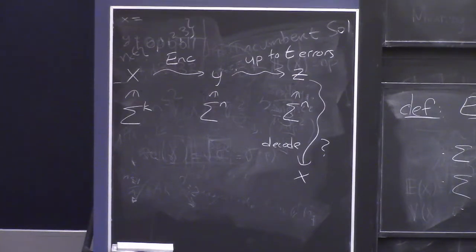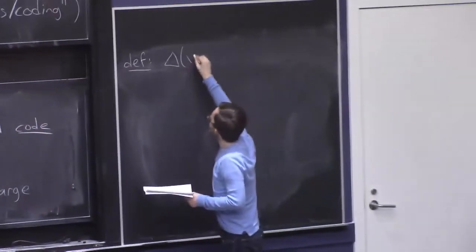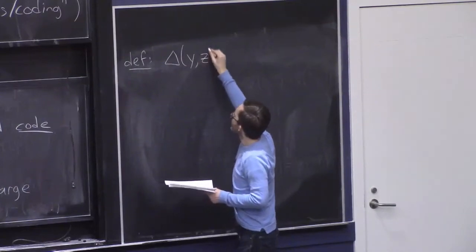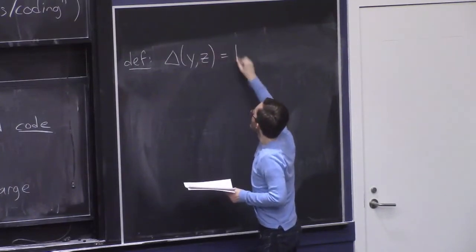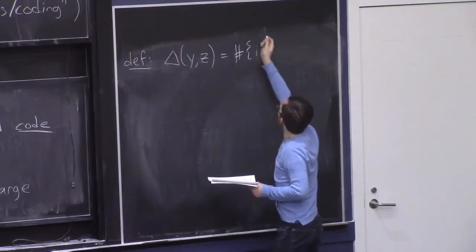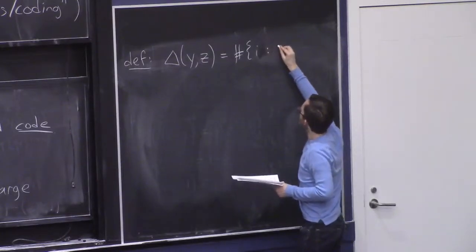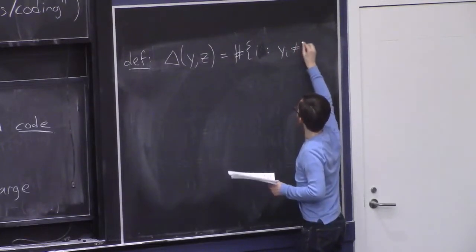So one definition we'll need for this is that of Hamming distance. So presumably you've seen this before. The Hamming distance denoted delta between two strings, Y and Z, is simply the number of coordinates on which they differ. The number of coordinates I such that YI is different from ZI.